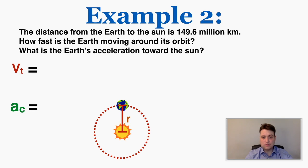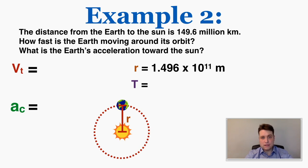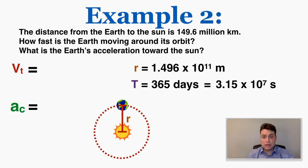Converting to scientific notation and meters gives a radius of 1.496 × 10¹¹ m. To solve for tangential velocity I need the radius and the period. The problem doesn't give the period, but context tells us: the period is how long the Earth takes to go around the circle once — which is one year. One year is 365 days, and converting to seconds gives a period of 3.15 × 10⁷ s.